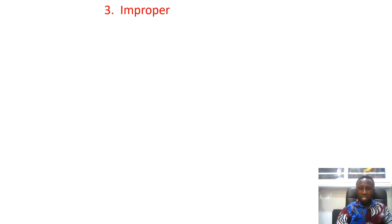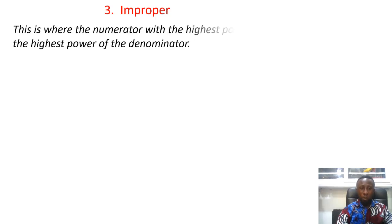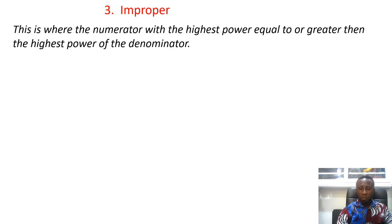Our next type is improper rational functions. We have covered this under polynomials — you can watch my previous video. Simply put, this is where the numerator has the highest power equal to or greater than the highest power of the denominator. There are two sub-types here.